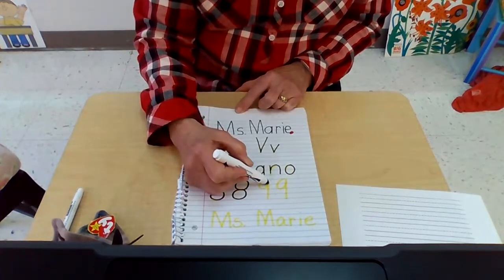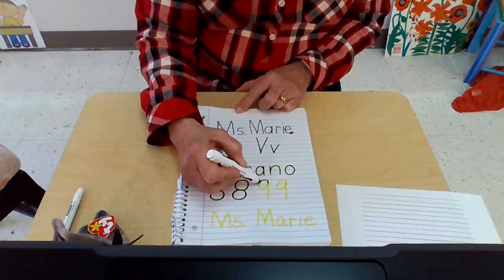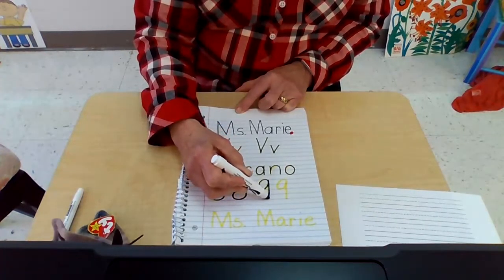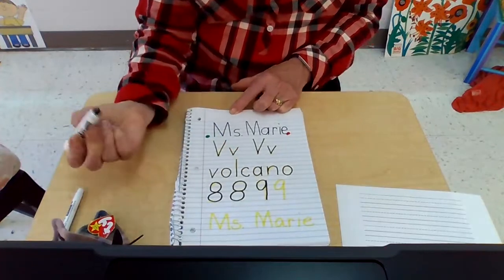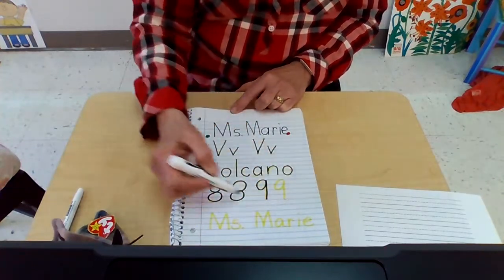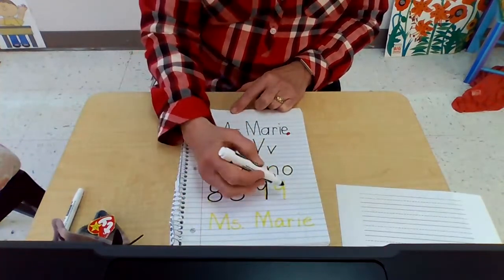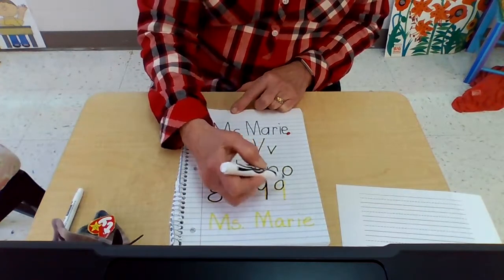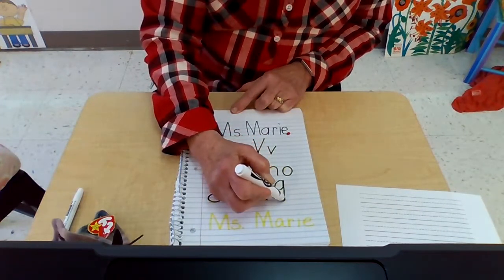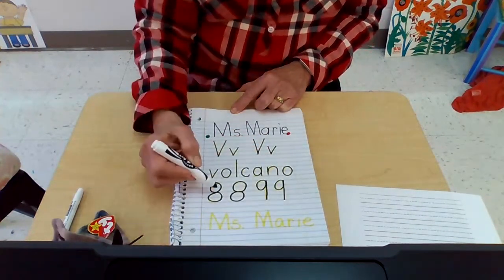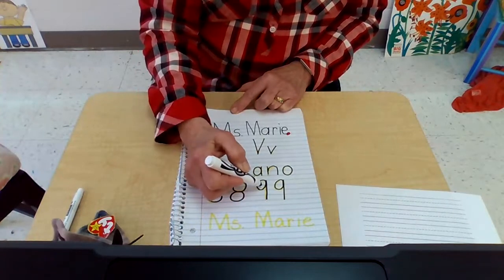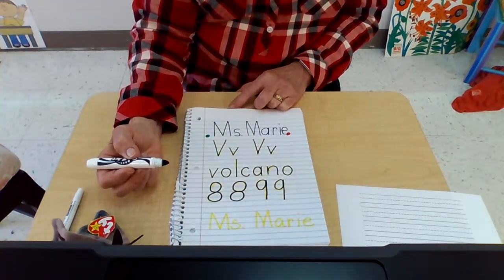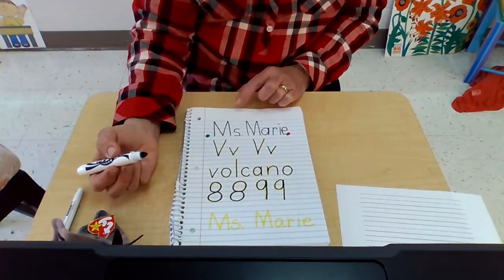Number nine has a circle and a big long stick touching the ground. All our numbers are going to sit on the ground line. Circle and a stick. Eight, eight, nine, nine. Those are two very good numbers to practice.